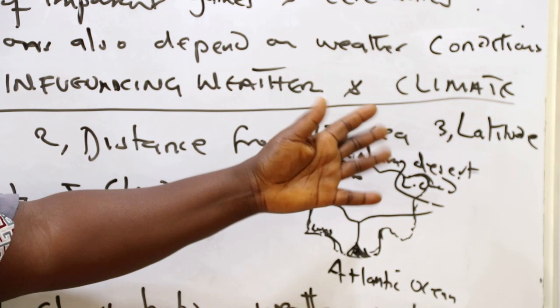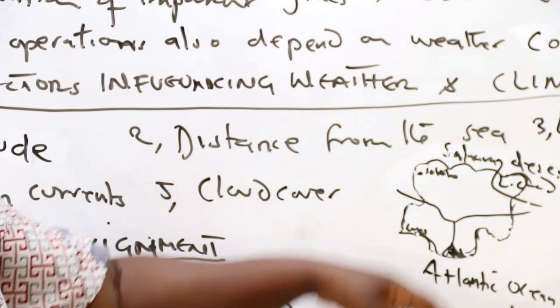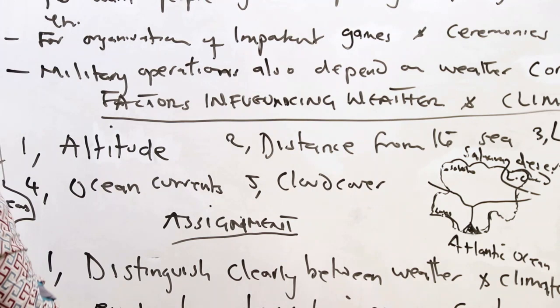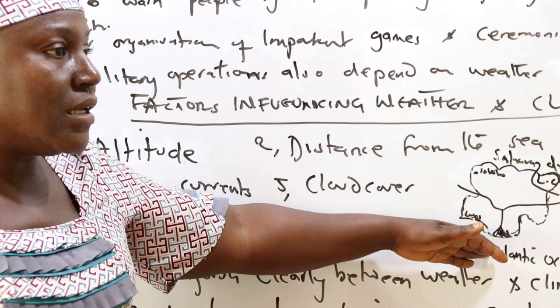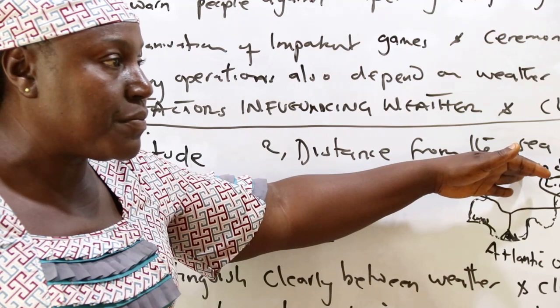Areas in the north, like Sokoto and Maiduguri, are bordered by the Sahara Desert, so the influence of the Sahara Desert is much more prominent in the north. Those areas in the south have the advantage of the sea very close to them and tend to experience much more moisture. The closer an area is to the sea, the more moisture it experiences; the further away, the less moisture.